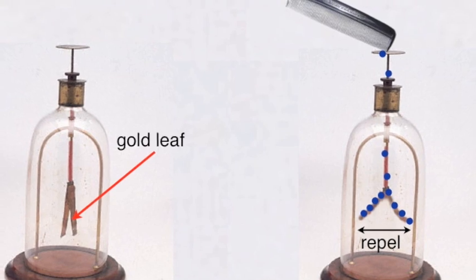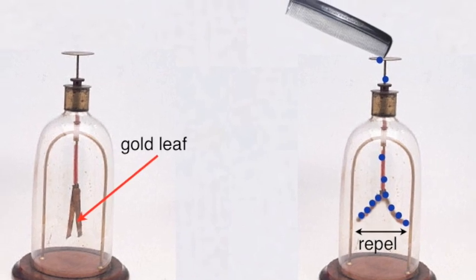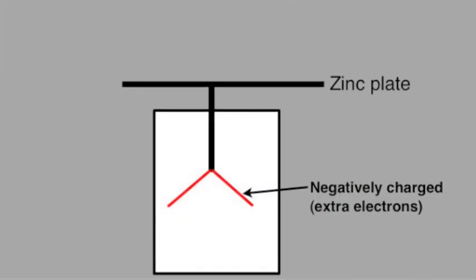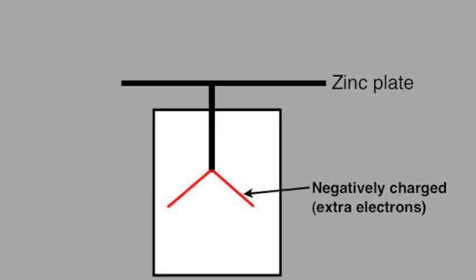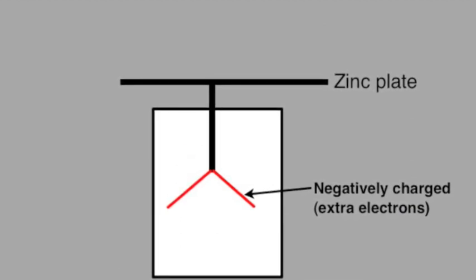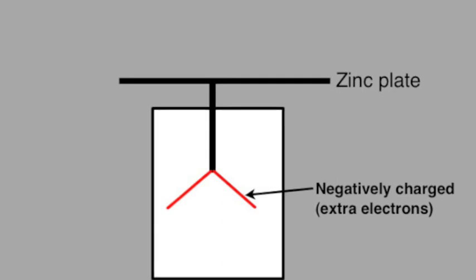In this particular demonstration, the gold leaf electroscope will be negatively charged. Apart from applying a negative charge to the whole electroscope, we'll also put a zinc plate on the top.